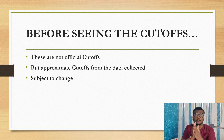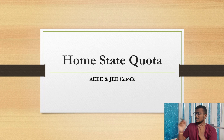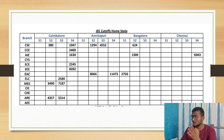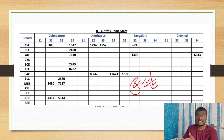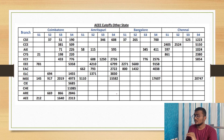Before seeing the cutoffs, please note these are not official cutoffs but approximate cutoffs from the data I collected in the previous video, so these are subject to change. First, I will be showing you the homestate cutoffs for both APEEE and JEE. These are the APEEE cutoffs — you can take a screenshot. These are the JEE Mains cutoffs — take a screenshot. Coming to open quota cutoffs for both APEEE and JEE: these are the APEEE cutoffs for open quota — you can take a screenshot.